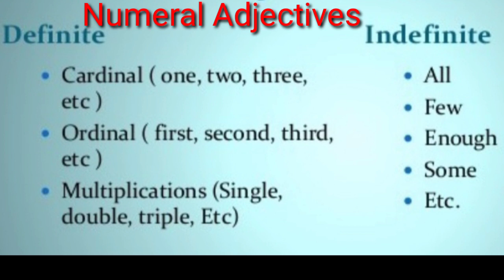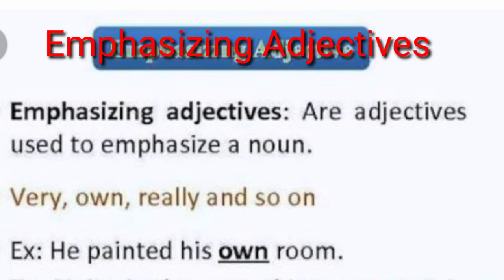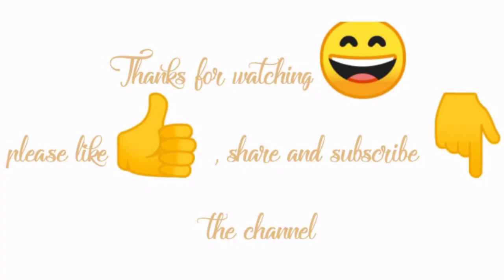Examples of indefinite numeral adjectives are: all, few, enough, some, etc. Now, emphasizing adjectives are adjectives used to emphasize a noun. For example: very own, really, and so on. Sentence example: 'He painted his own room.' Here the word 'own' is emphasizing the noun 'room' — that painted room is his own.